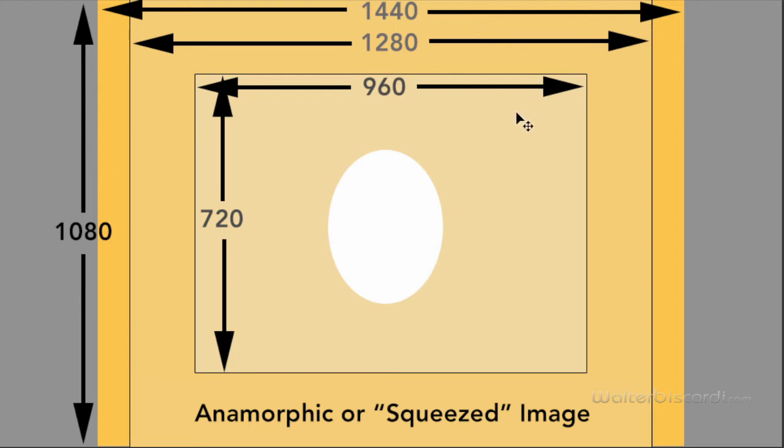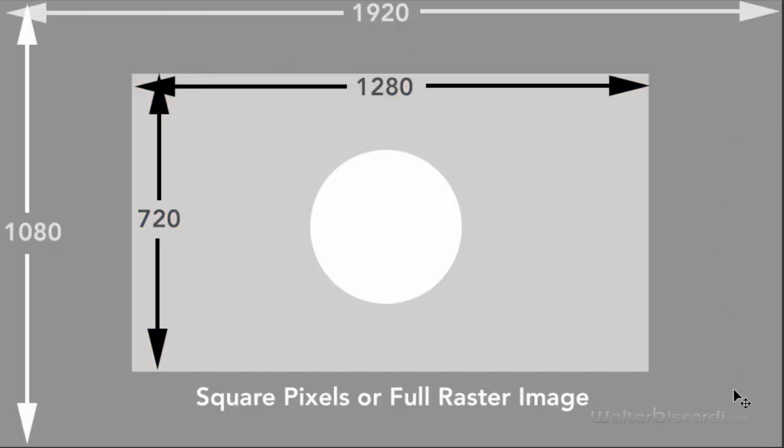My quick tip is to always set up your sequences in the full raster image size. So, if you're working in 1080p HD, make sure your sequence is in full 1920x1080. If you're working in 720p, make sure your sequence is in full 1280x720.